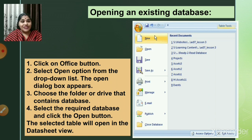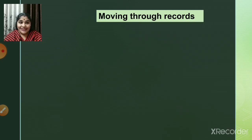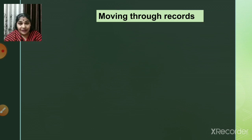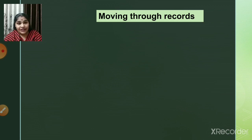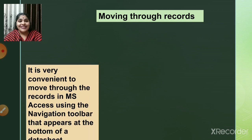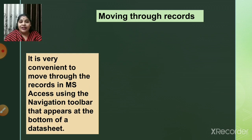The next topic is moving through records. Once you open a database with a large amount of data — say 2,000 student records — and you need to navigate to the 200th or 250th record, how do you move through the records efficiently? The most convenient way is using the navigation toolbar that appears at the bottom of the Datasheet.